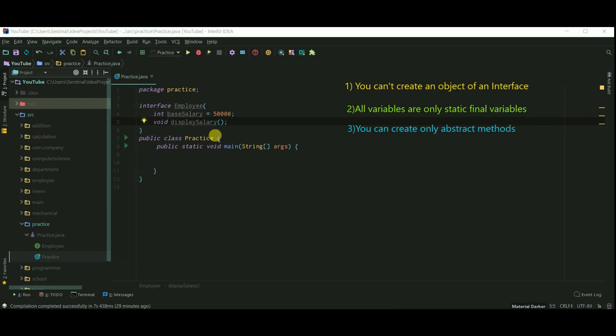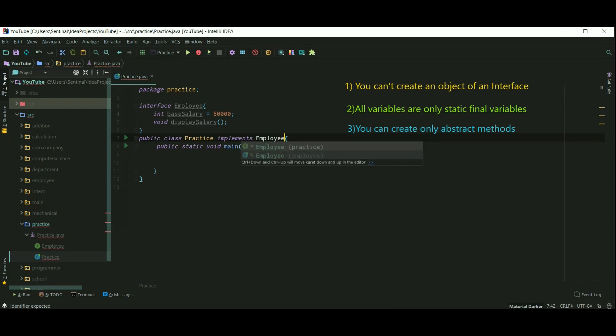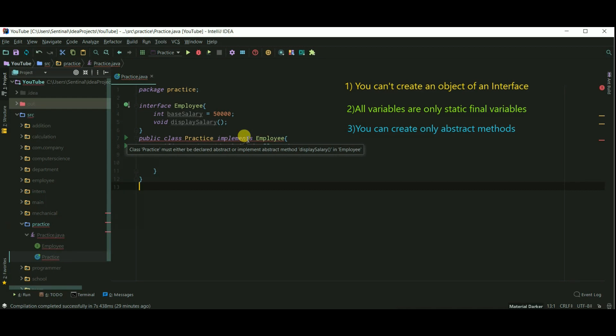To inherit an interface we need to use the keyword implements. Now it's showing an error because we need to override the display method because you can only create abstract methods. Public void display. And I am just displaying the base salary.